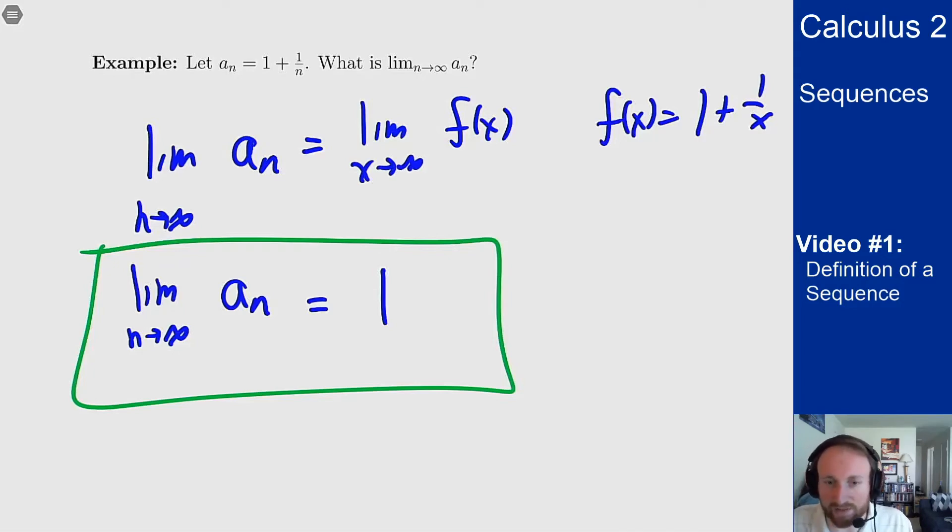But there's the idea of a sequence. The idea is a list of numbers, and I want to talk about what happens to a list of numbers as I go further and further out in the sequence. Am I going to something nice? Am I diverging? Am I oscillating? What's happening? That's what limits of sequences start to discuss.